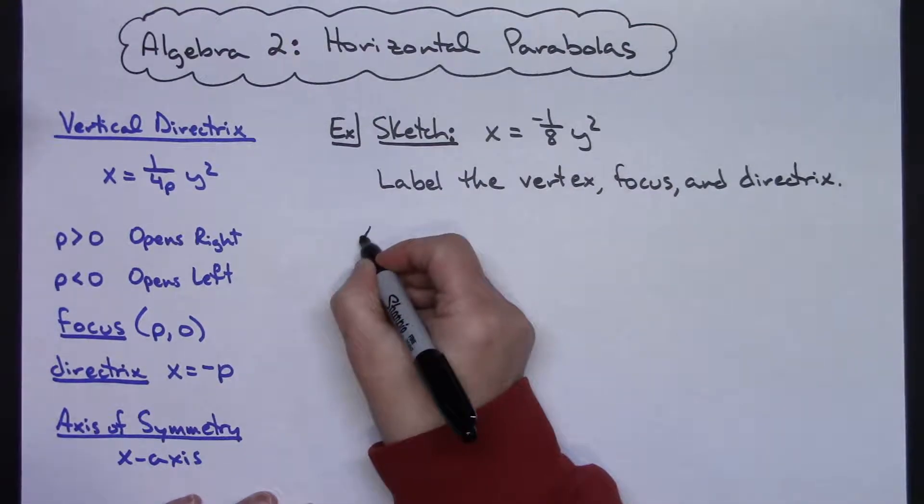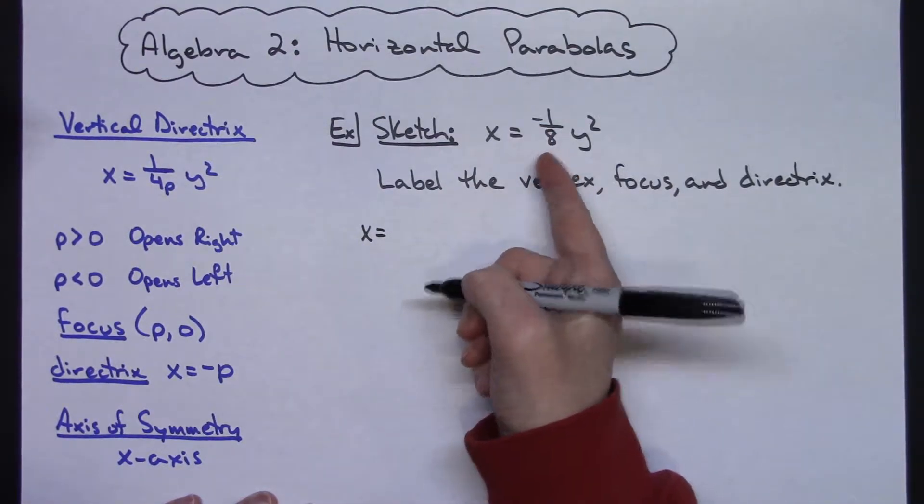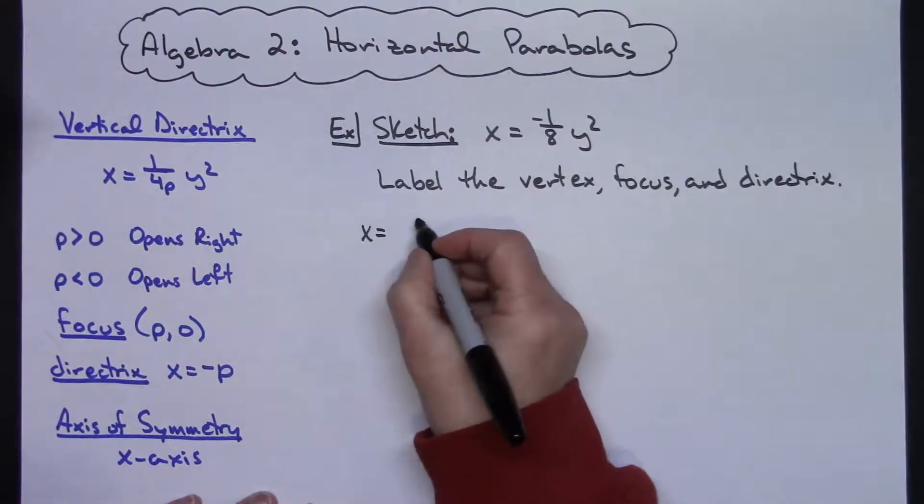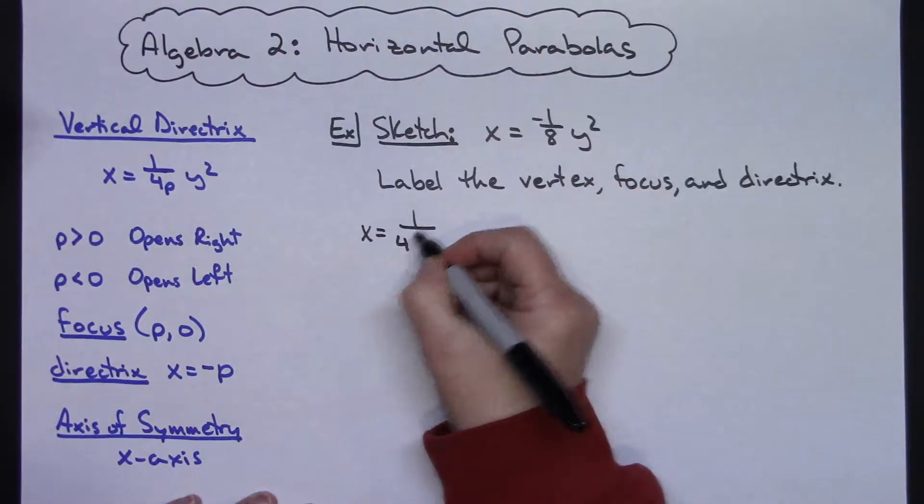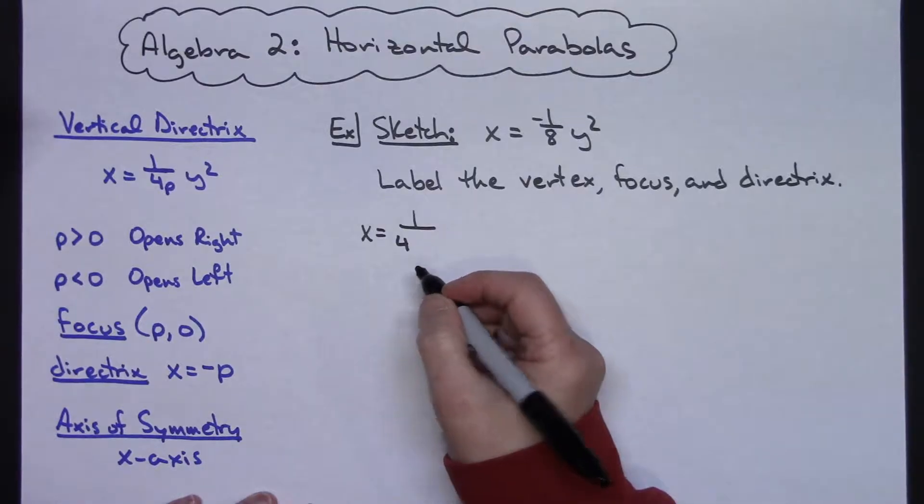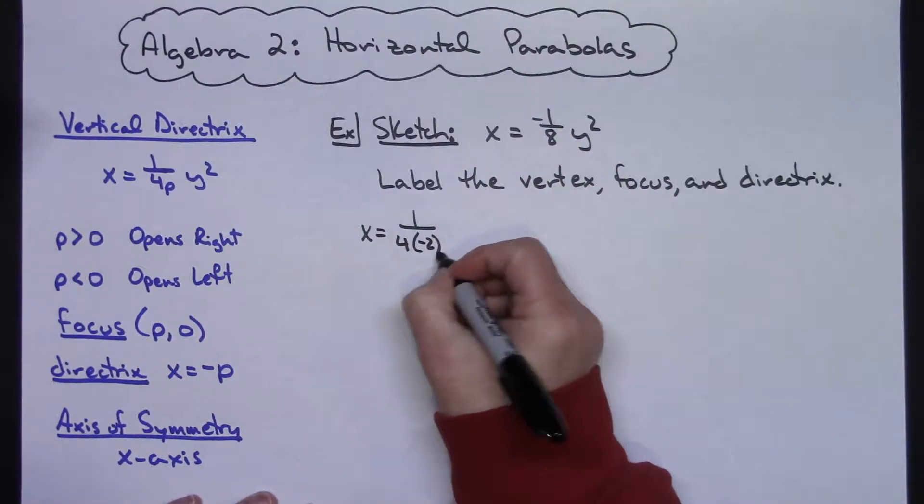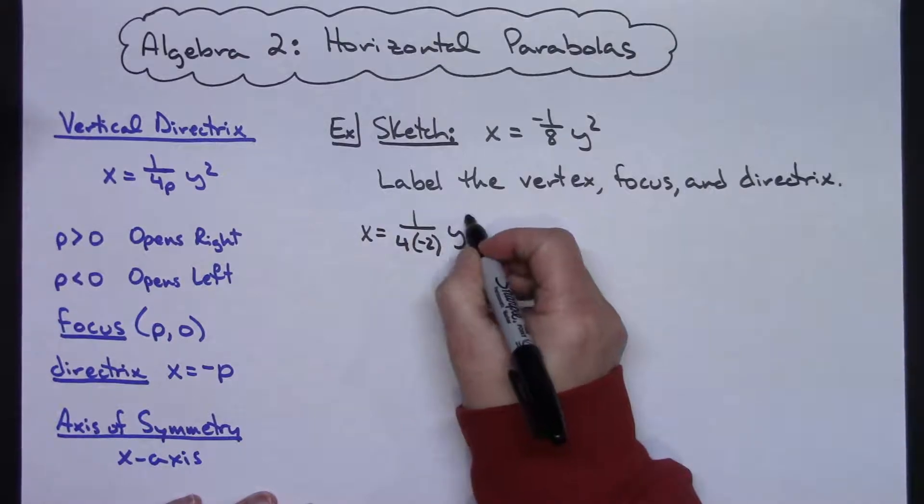I can rewrite as x equals and then I'm going to go ahead and pull that negative down in the bottom. I know I have to have a 4 out there, so 4 goes in the 8 2 times and I need it to be negative so then let's go negative 2, y squared.